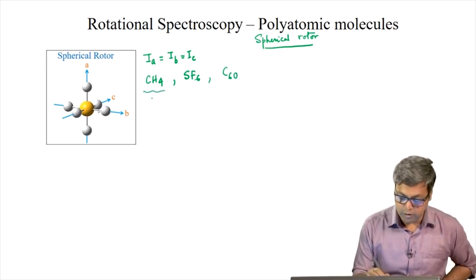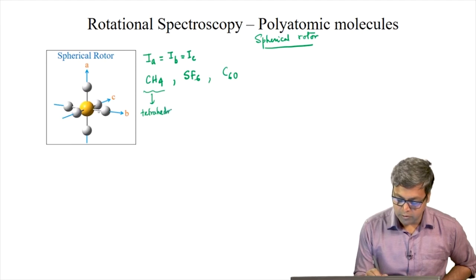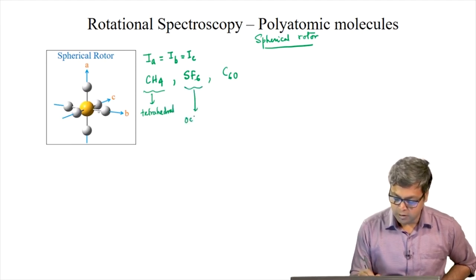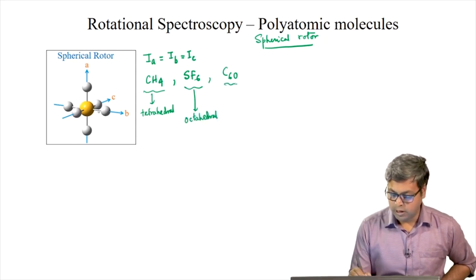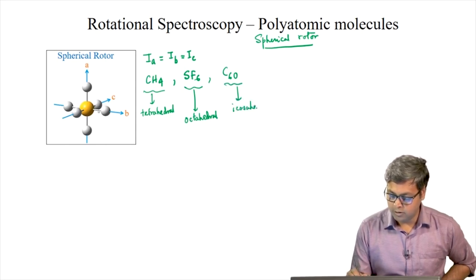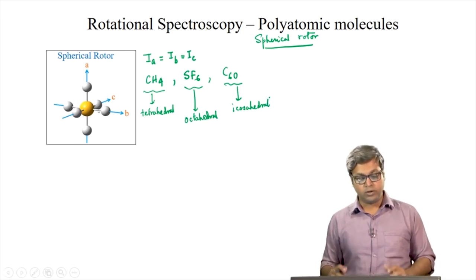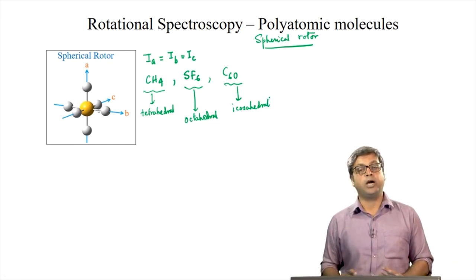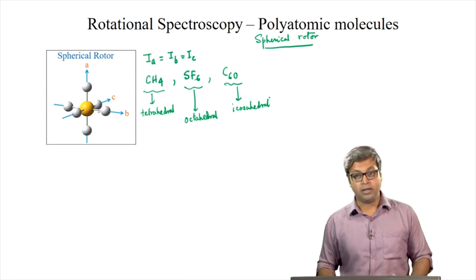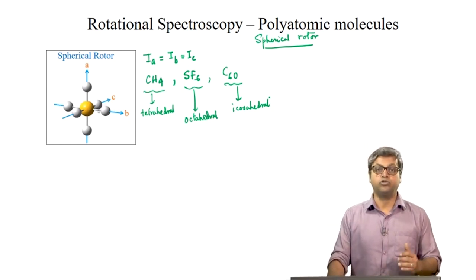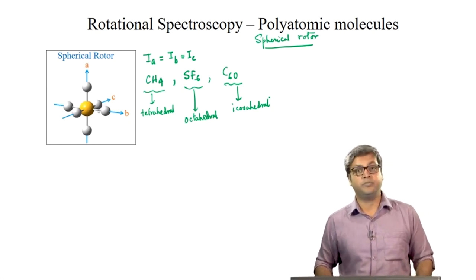CH4 is a tetrahedral molecule and C60 is an icosahedral molecule. These molecules have no dipole moment and again they are not going to show a rotational spectrum.